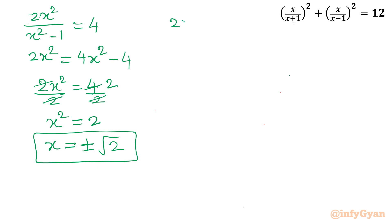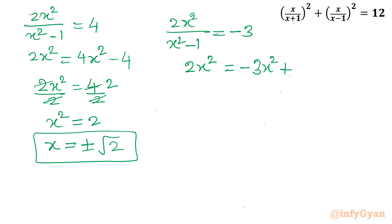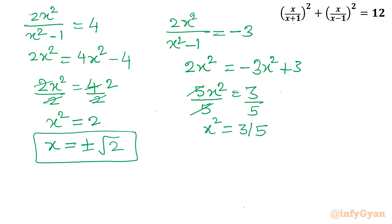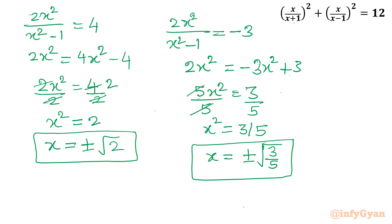For y = −3: 2x²/(x²−1) = −3. Cross-multiplying: 2x² = −3x²+3, giving 5x² = 3, so x² = 3/5, and x = ±√(3/5). These are two more solutions. Notice none of the solutions equal ±1, so all are valid.